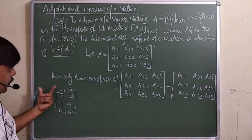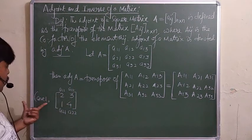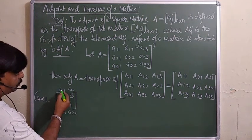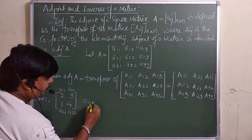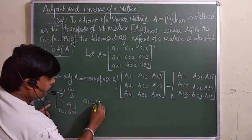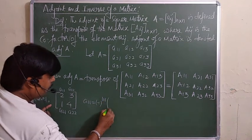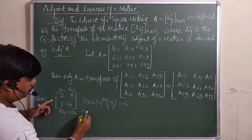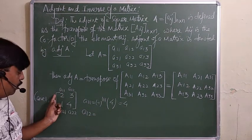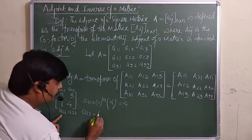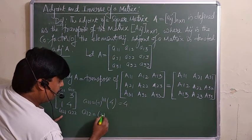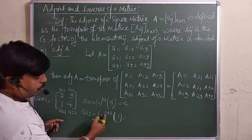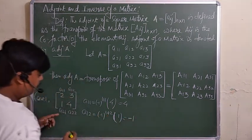For a 2×2 matrix, to find the adjoint: for element A_11 (first row, first column), the cofactor is (−1)^(1+1) times the remaining element, giving 4. For A_12 (first row, second column), it is (−1)^(1+2) times the minor, giving (−1)×1 = −1.